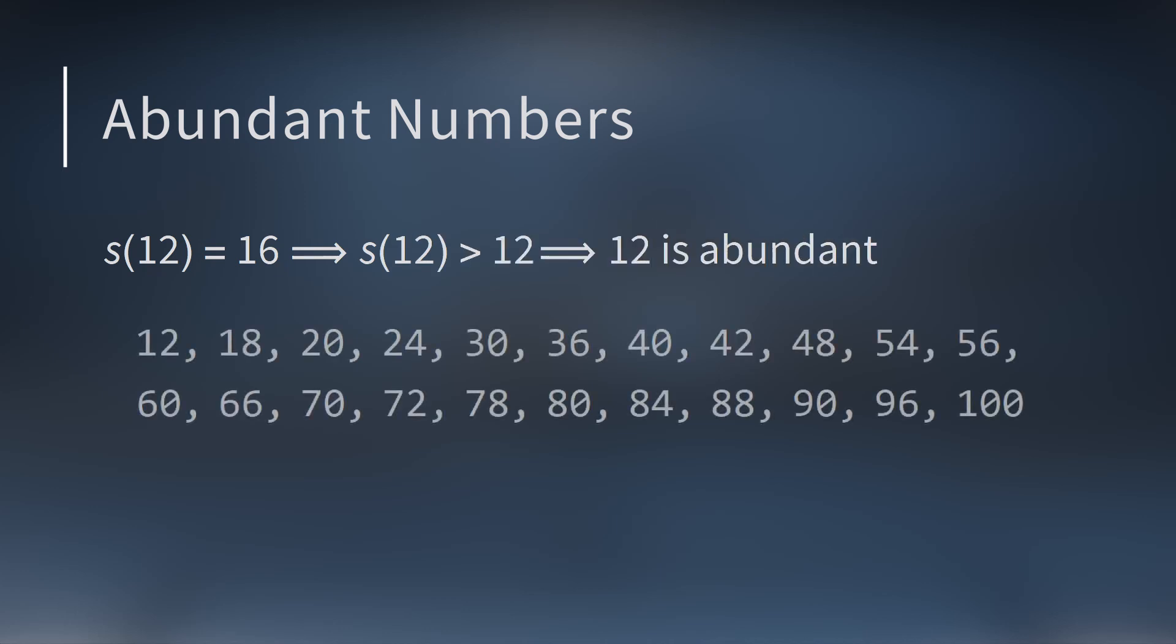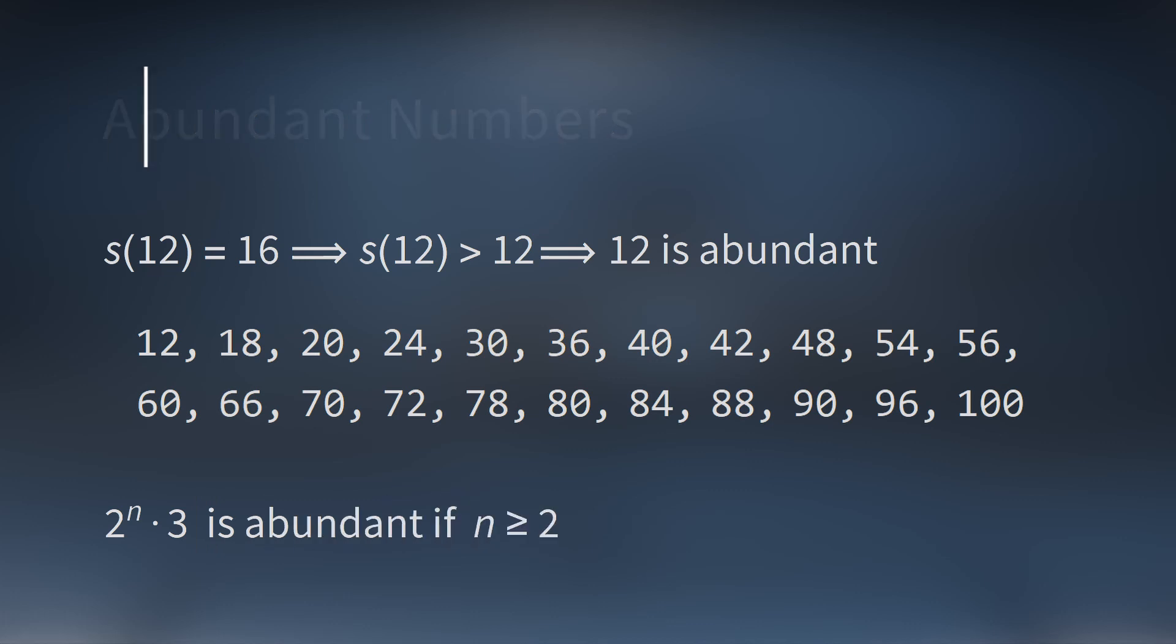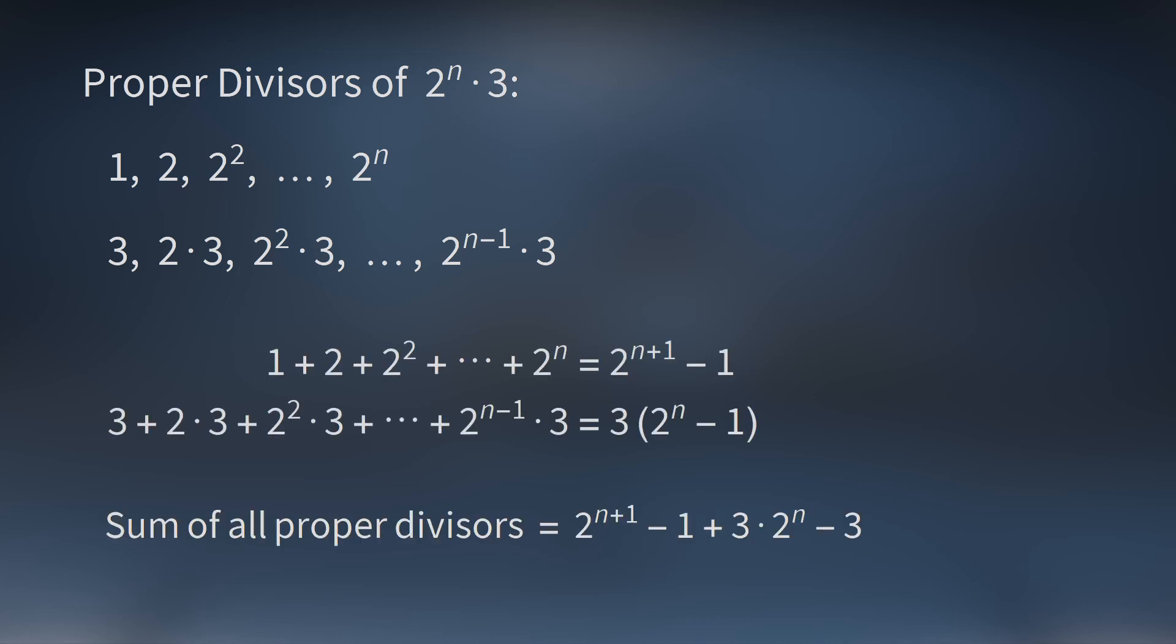What about abundant numbers? We have 12. That's an abundant number. And here are the first few abundant numbers. One pattern is if you take any power of 2 greater than 1 and multiply it by 3, then that number is going to be an abundant number. We can quickly show why this works. If you look at the proper divisors of 2 to the nth times 3, you have 1, 2, 2 squared, on and on up to 2 to the nth, and then you have 3, 2 times 3, 2 squared times 3, on and on up to 2 to the nth minus 1 times 3. Remember, we're leaving out 2 to the nth times 3, because that's not a proper divisor. And if you add up all these divisors, which are two geometric series, you get this expression. When simplified, it's abundant whenever n is greater than 1. So there's also an infinite number of abundant numbers too. This isn't all of them, but it is an infinite number of them.